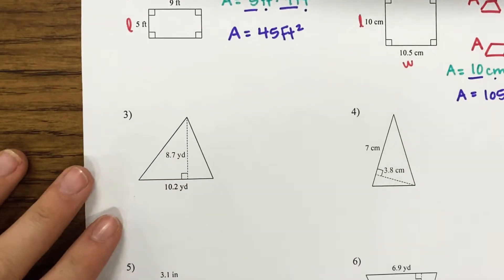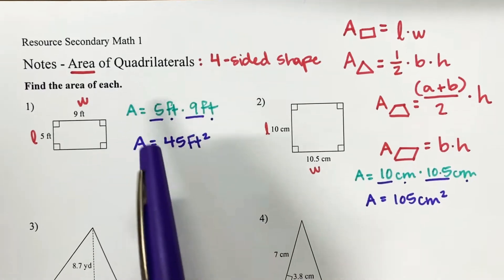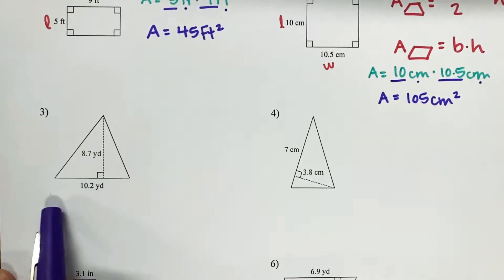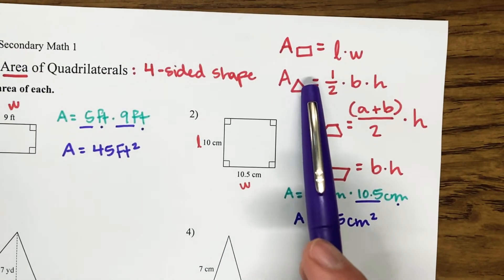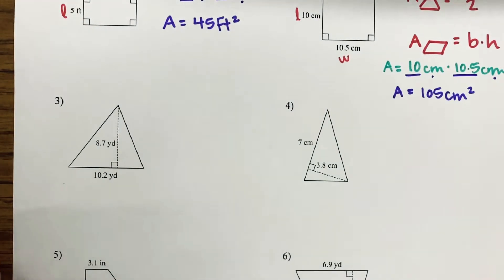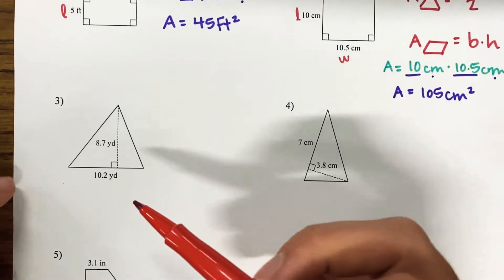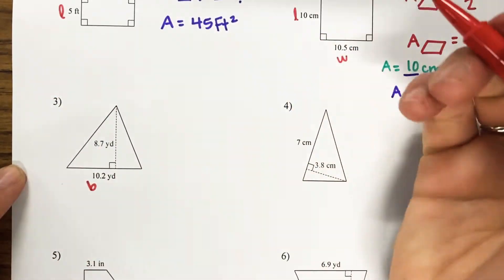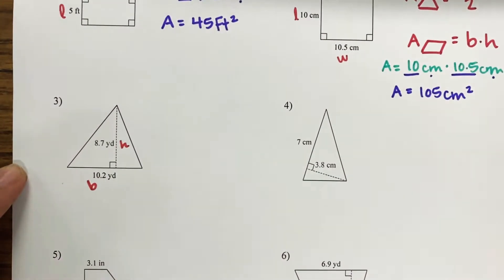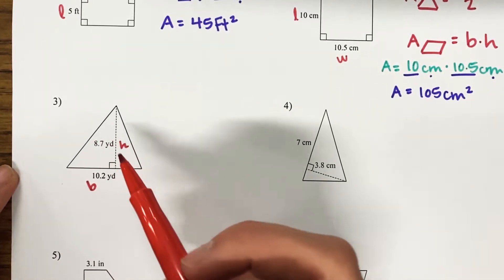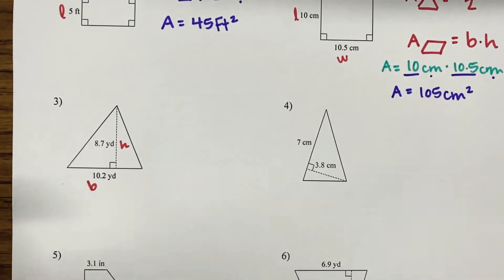Let's look at number 3. Now I know we are talking mostly about quadrilaterals, but let's go ahead and review area of triangles. So we're going to have to use our area of the triangle formula. The first thing we need to identify is our base and our height. Base — think like bottom of your triangle — and height is how tall it is. So I know that my base is 10.2 yards and my height is 8.7 yards. Now I can plug this into my area formula.